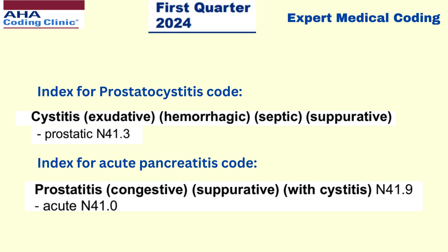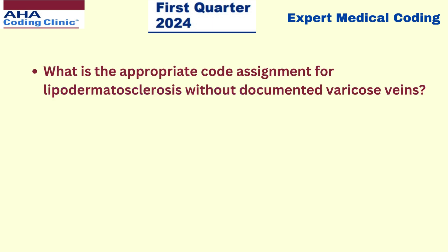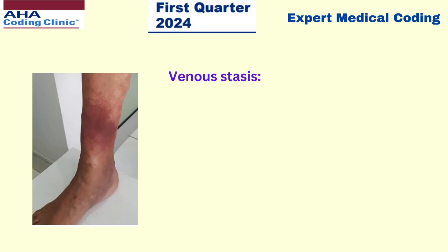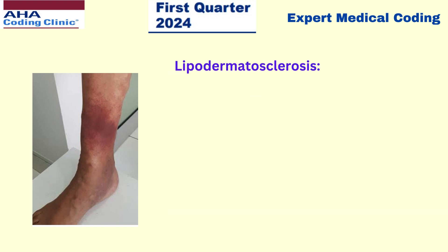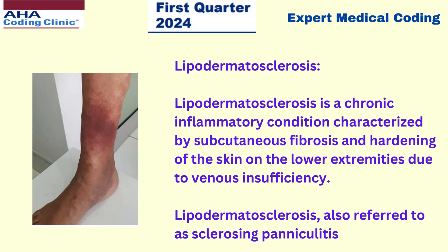Now let's move to the next scenario: what is the appropriate code assignment for lipodermatosclerosis without documented varicose veins? Before moving to the scenario, let us see what venous stasis is. Veins normally send blood back to the heart to get more oxygen. If you have venous stasis, your veins can't send blood from your legs back to your heart. Blood pools up in the lower legs and creates swelling, pressure, and skin problems. Lipodermatosclerosis is a chronic inflammatory condition characterized by subcutaneous fibrosis and hardening of the skin on the lower extremities due to venous insufficiency. It is also referred to as sclerosing panniculitis.